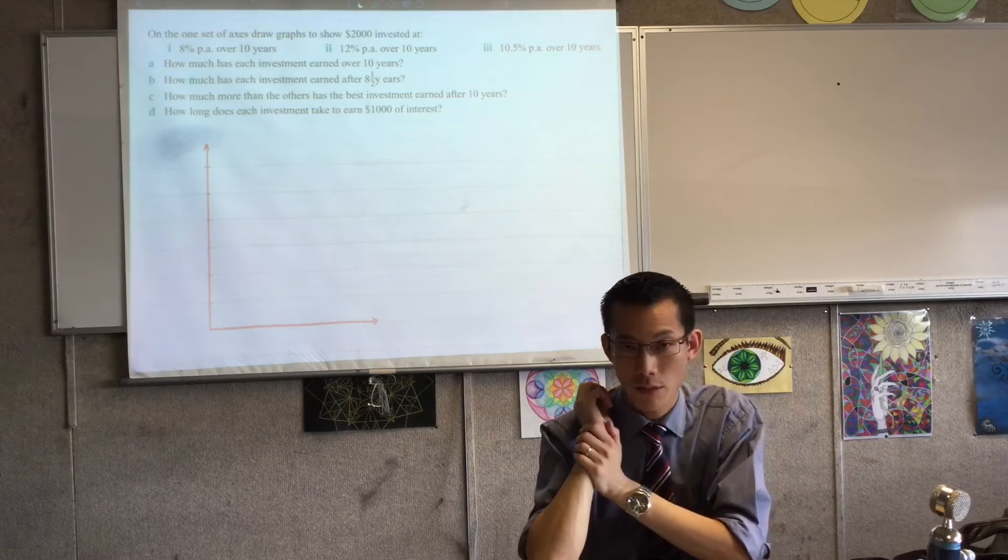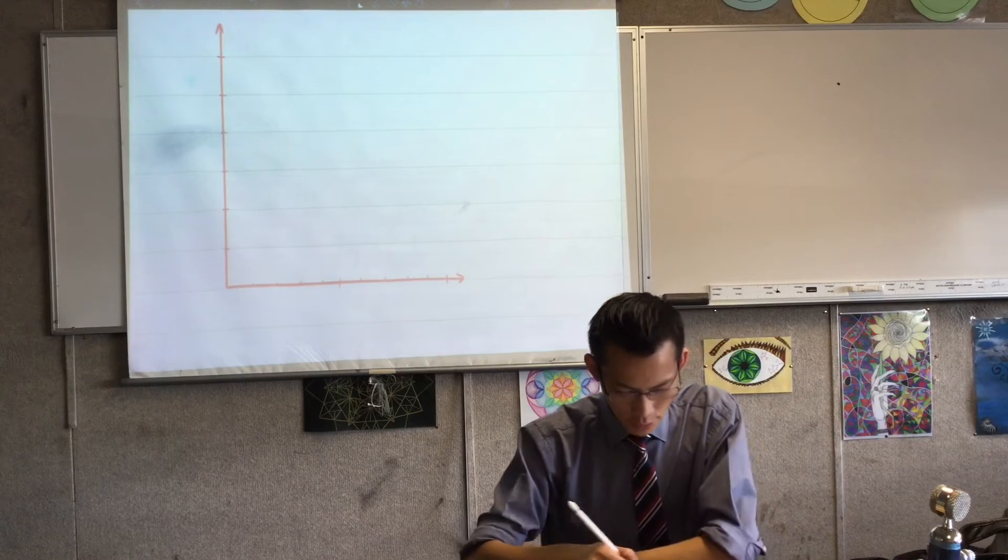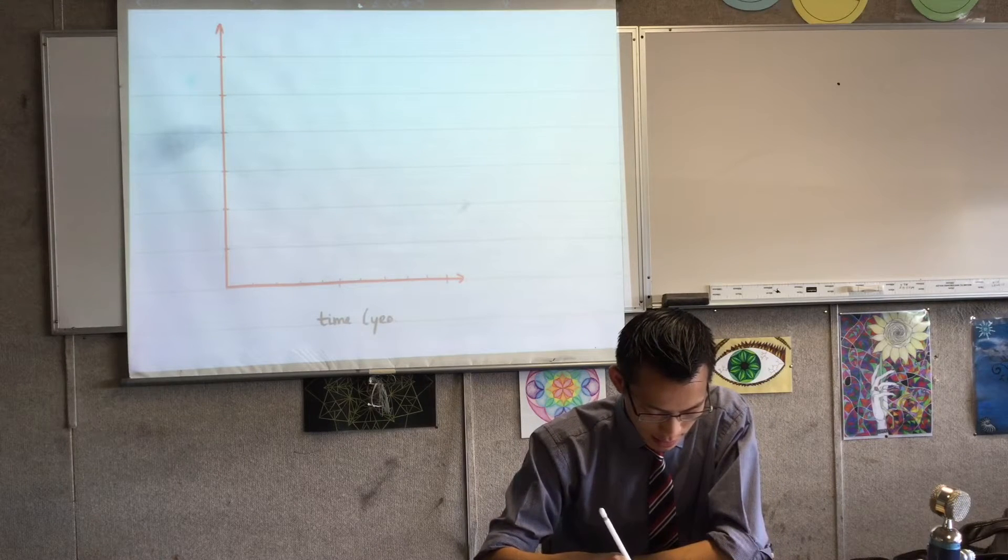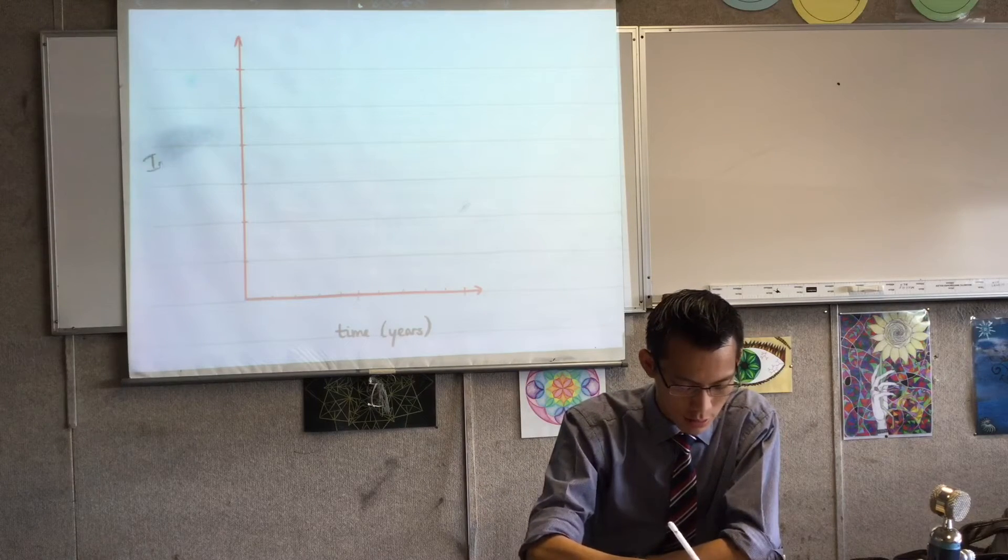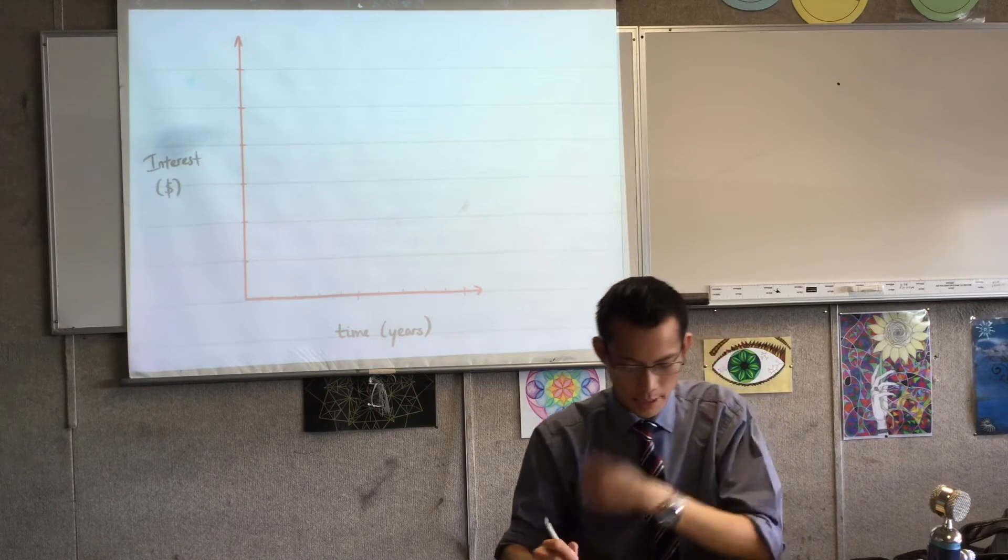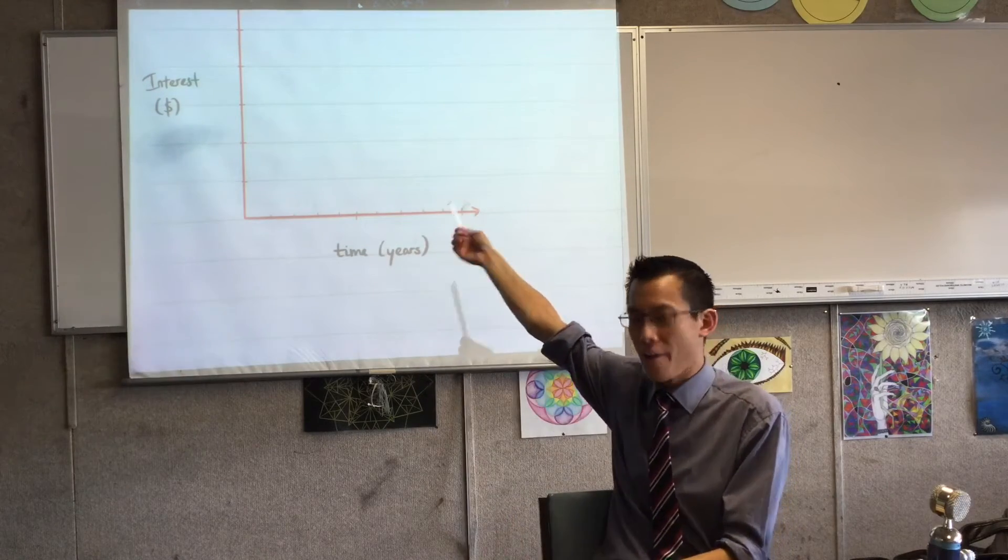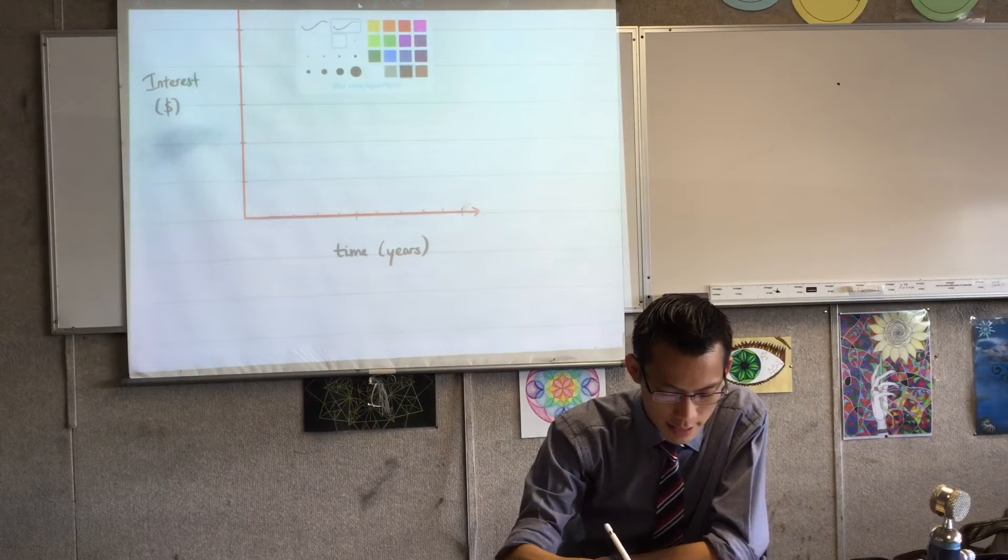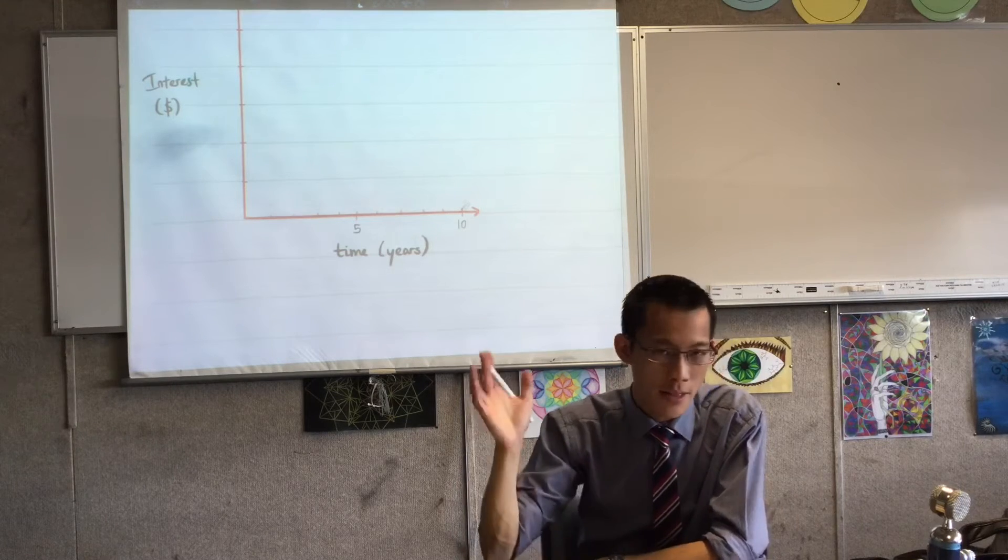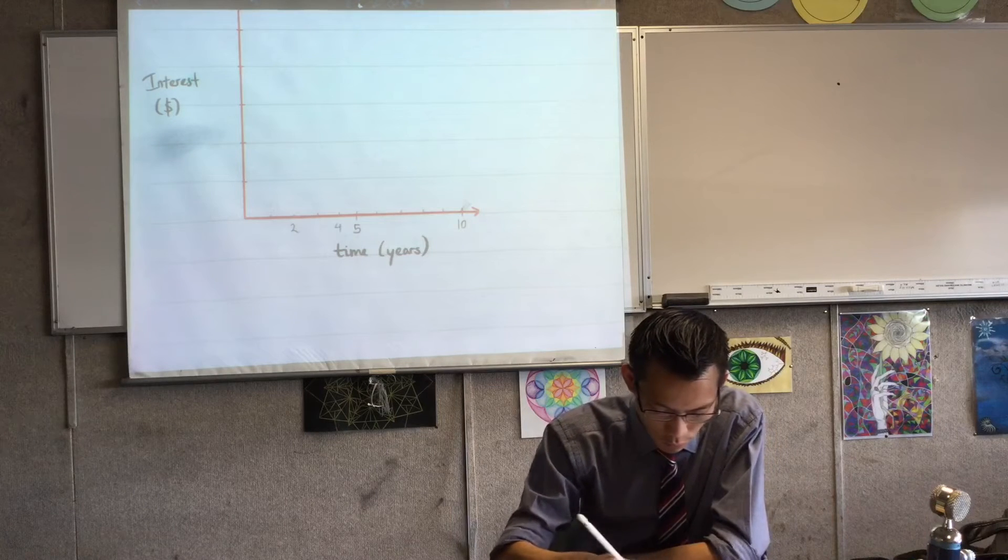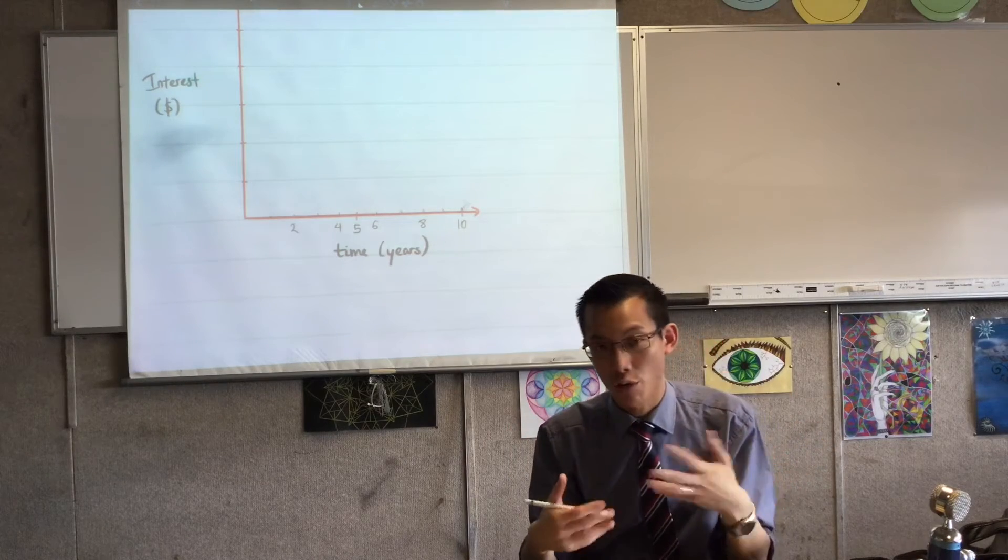On one set of axes, you can see I've got my axes already prepared, draw graphs to show $2,000 invested at various rates. They ask you to go over 10 years. So I've got, just like I've seen in the previous question, I've got a time axis down here. I'm going to label that as years. And that makes my vertical axis the interest axis, so I'm going to write interest over here in dollars. Because they're all over 10 years, I've made the largest value 10. I'm going to write in, that's going to be 10, halfway would be five, and I have all the other numbers in between here, 2, 4, 6, and 8.